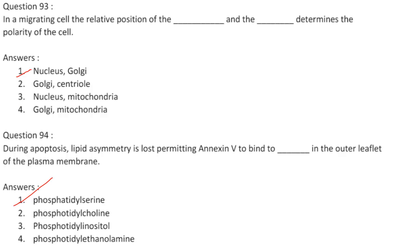In a migrating cell, the relative position of the nucleus and the Golgi determines the polarity of the cell. Answer is option 1.